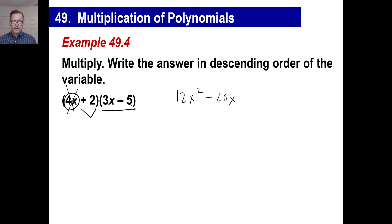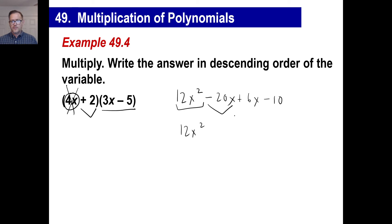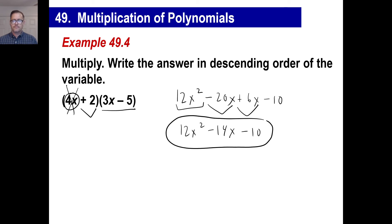Then 2 times both of those. 2 times 3x is 6x. 2 times negative 5 is negative 10. Same thing here — we have a 12x squared. A negative 20 plus 6 of something gives you negative 14x. And a negative 10 at the very end. And there we go.